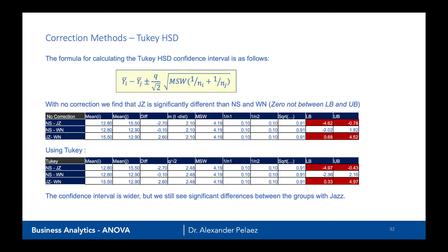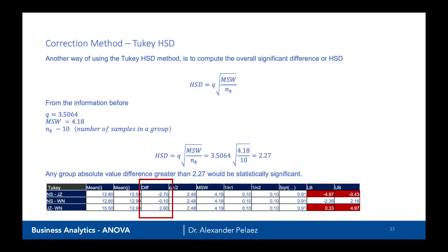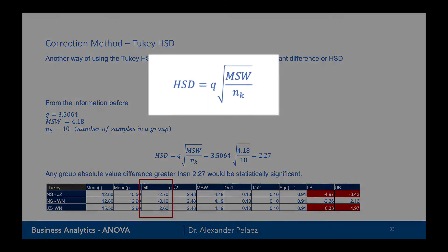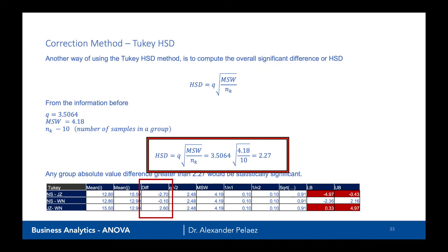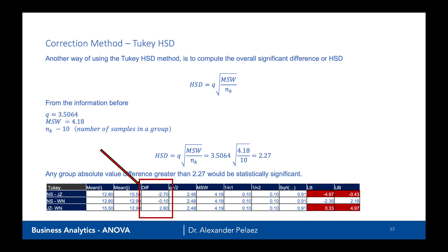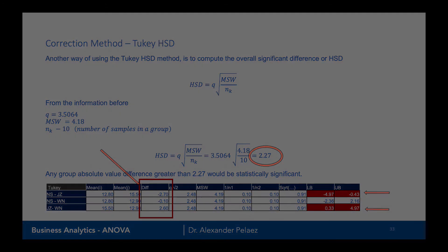Another way of using Tukey HSD is to compute the HSD value — the overall significant difference — which gives the same result with a slightly easier calculation. We take q times the square root of the MSW (mean square within groups), divided by the number of samples in the group, assuming equal sample sizes. This gives HSD = 2.27. If the absolute value of the difference column is greater than 2.27, it is statistically significant. The absolute value of −2.7 is greater than 2.27, giving us the same result as before.